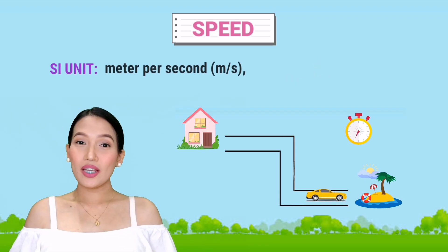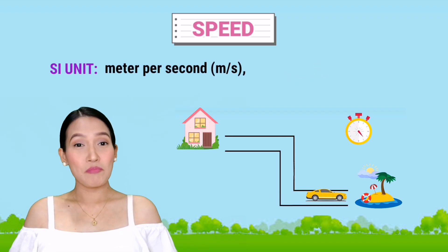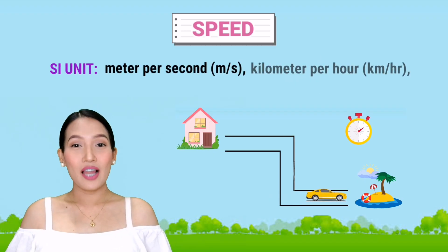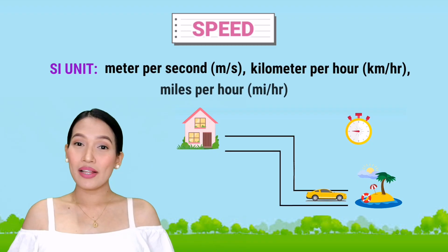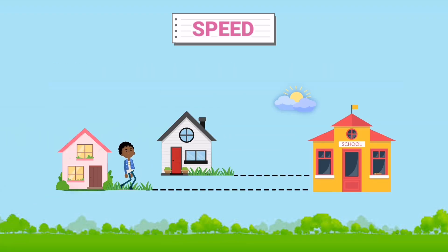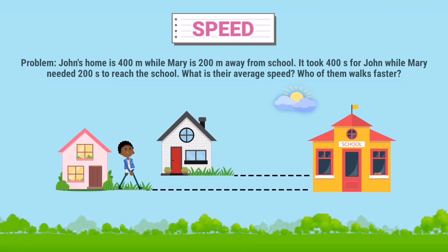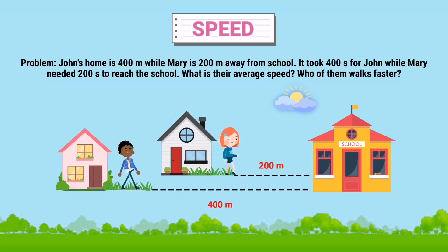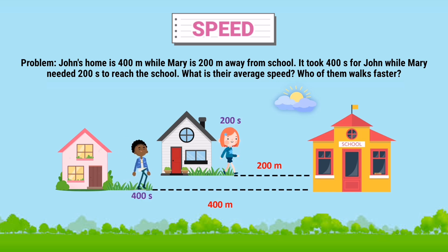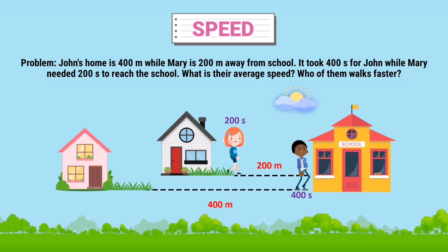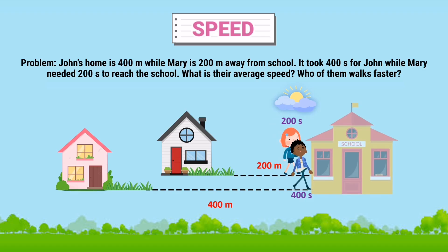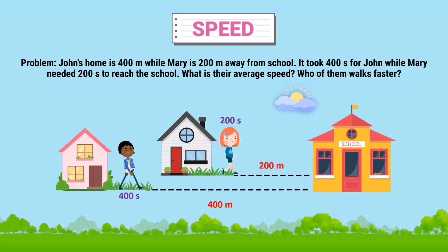We can express speed in terms of meters per second, kilometers per hour, or miles per hour. Let's take a look at this example. John's home is 400 meters while Mary is 200 meters away from school. It took 400 seconds for John while Mary needed 200 seconds to reach the school. What is their average speed?